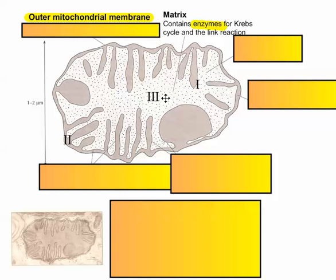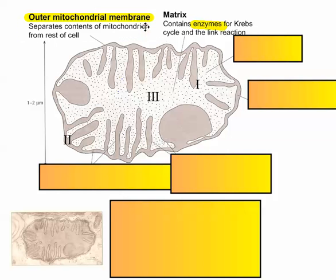various enzymes to help make them happen. You don't have to understand all that — just know that there are lots of enzymes in the matrix to help make the Krebs cycle happen smoothly. The outer layer here is called the outer mitochondrial membrane, and it basically